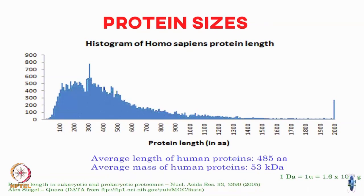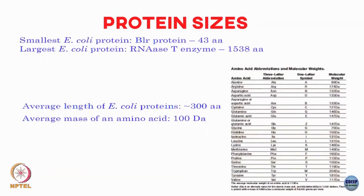You can do a similar analysis for E. coli. The smallest E. coli protein is 43 amino acids, the largest is around 1538 amino acids, and the average length comes out to around 300 — not that different from humans. It is not the case that proteins get much larger as the organism grows in complexity: the average E. coli protein is 300 amino acids and the average human protein is around 485.